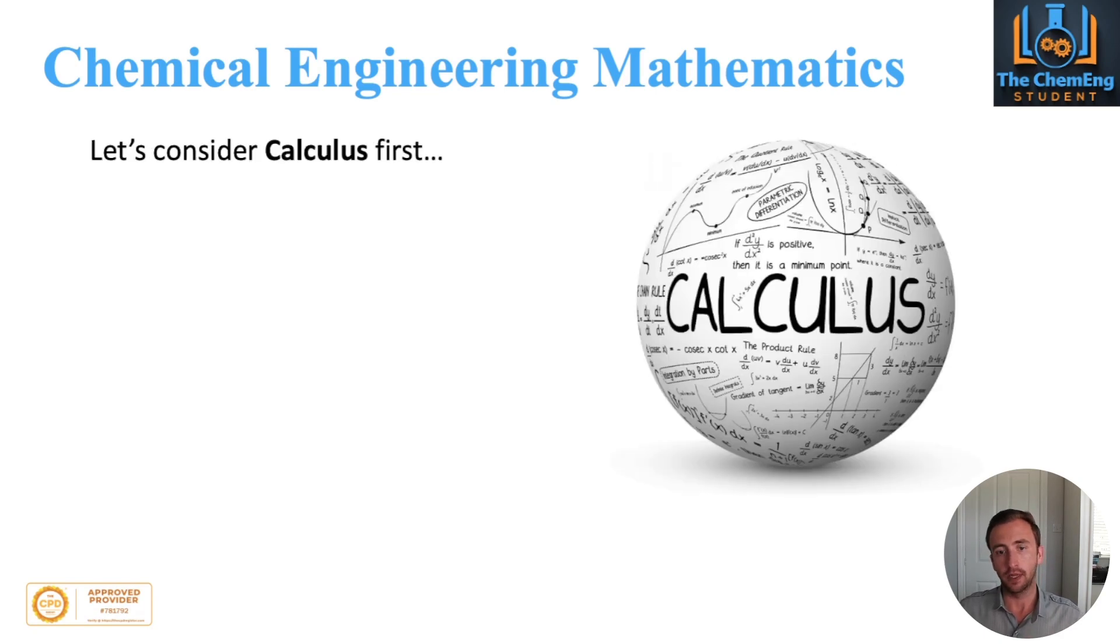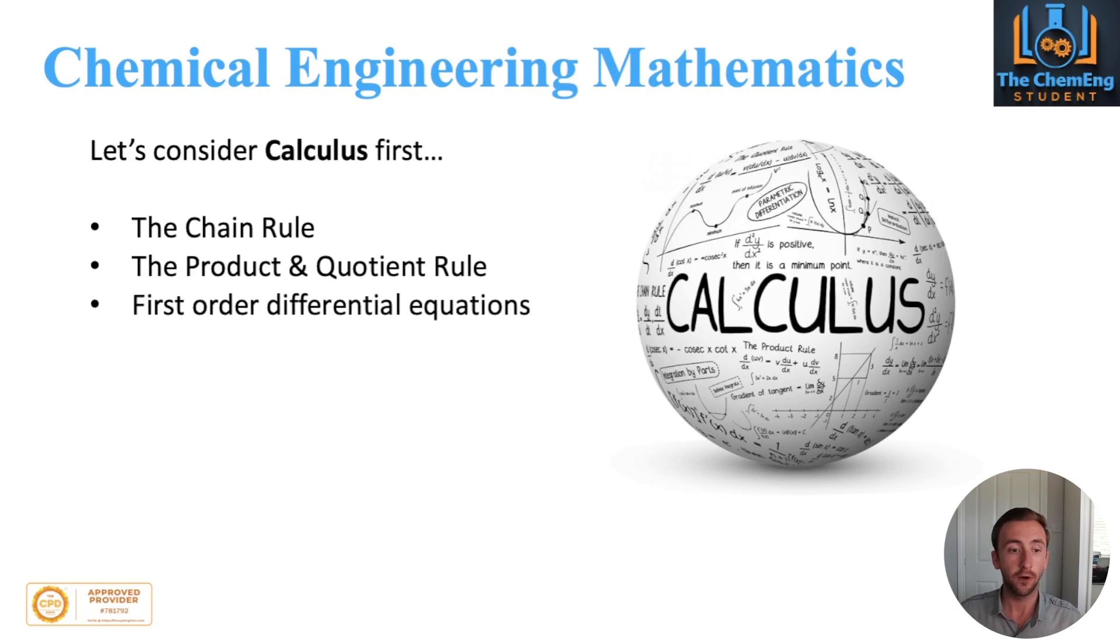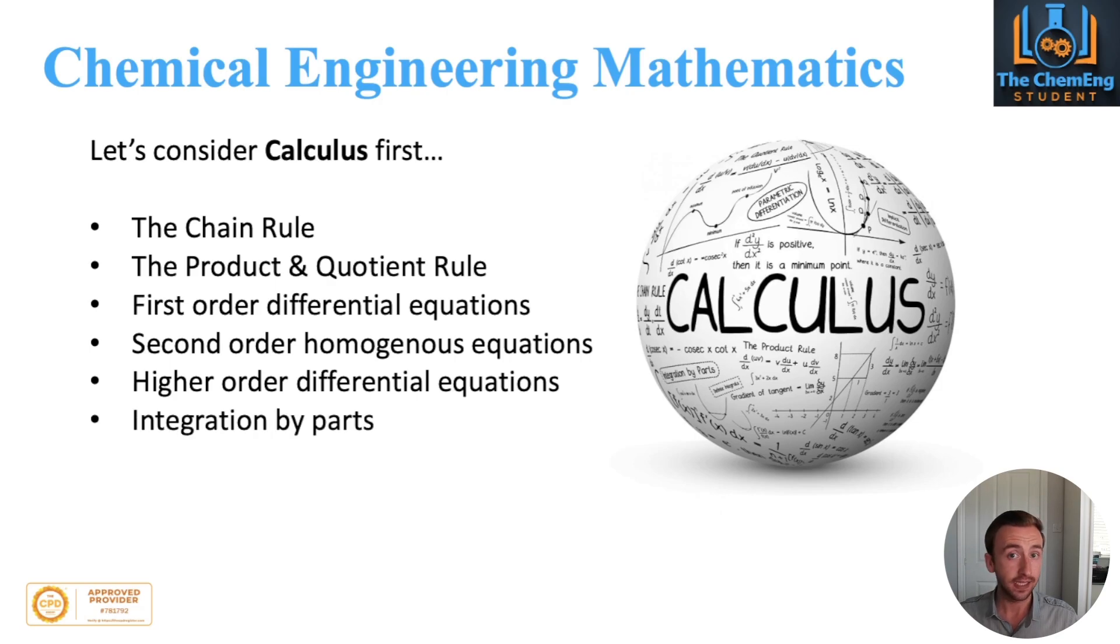Now let's start off with calculus. Calculus is the backbone of a lot of engineering. The things you need to ensure that you're confident in: the chain rule, the product and quotient rules, first order differential equations, second order homogeneous equations, higher order differential equations, integration by parts, integration by substitution, and also some numerical integration techniques. You must know them like the back of your hand because they are going to come up time and time again. When a problem is presented to you, you'll be able to map out a solution based on what mathematical technique you have to use. That's the trick and the key to mathematics in chemical engineering.